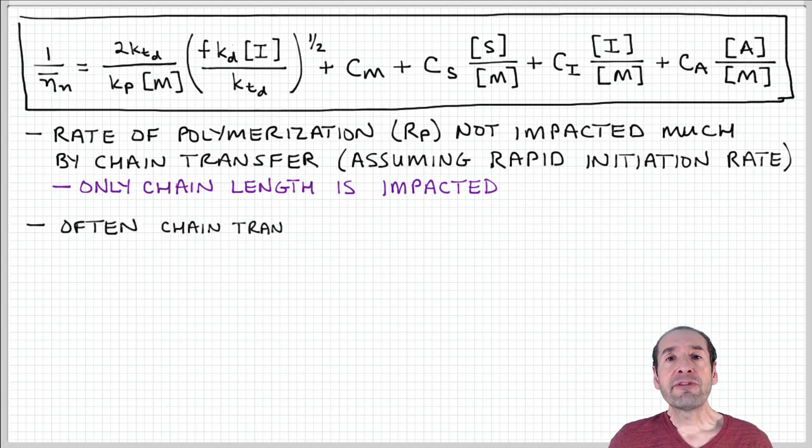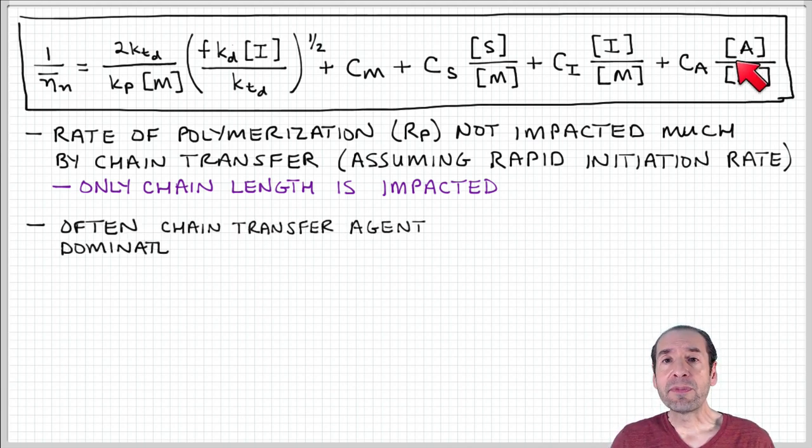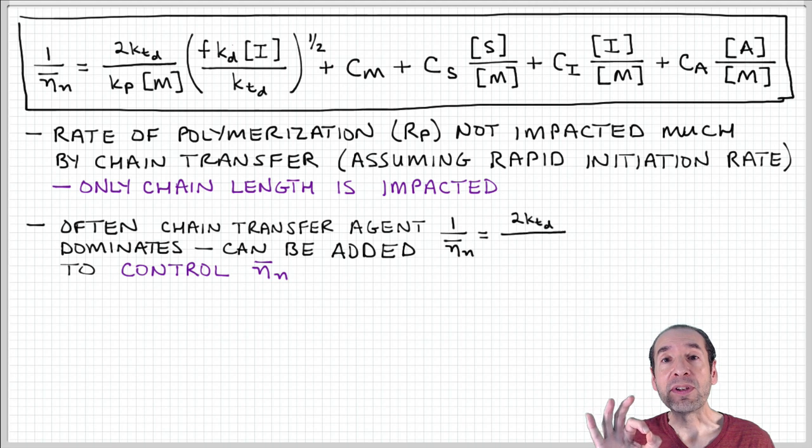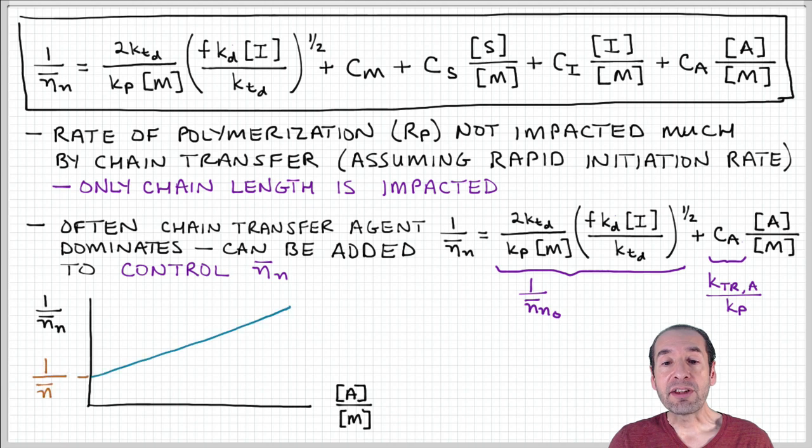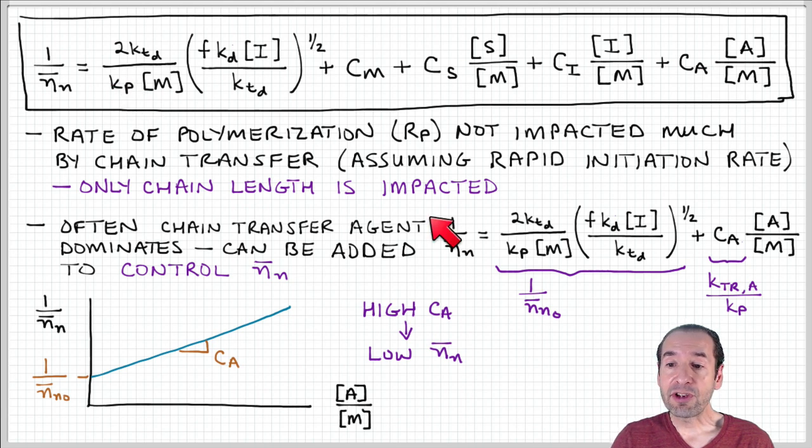So often we want to talk about this term, the chain transfer agent. And the reason is that this is something that we can control. So we can add, on purpose, a chain transfer agent that will allow us to manipulate further the degree of polymerization in our sample. And so this is an important capability that's available through this process. So if we just consider only this term in the degree of polymerization equation, notice that we end up with a linear equation for this term 1 over the degree of polymerization as a function of this ratio of the chain transfer agent concentration to the monomer concentration.